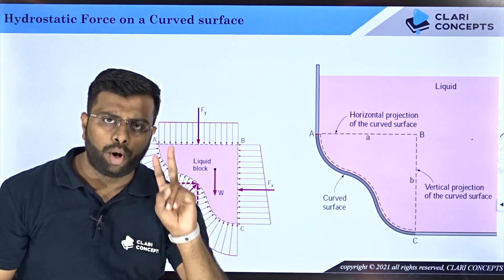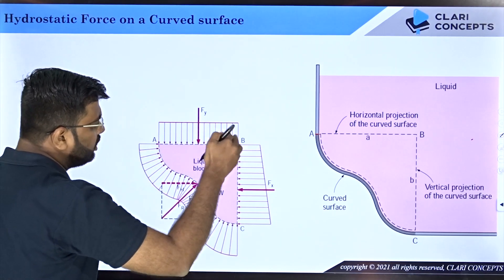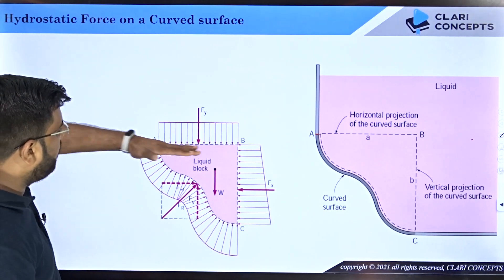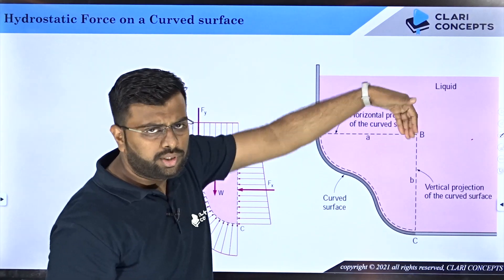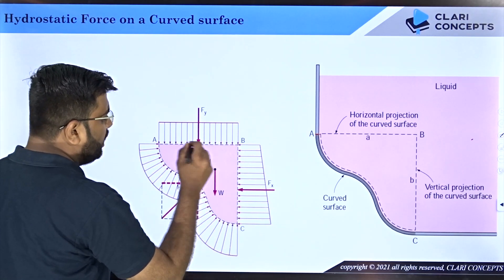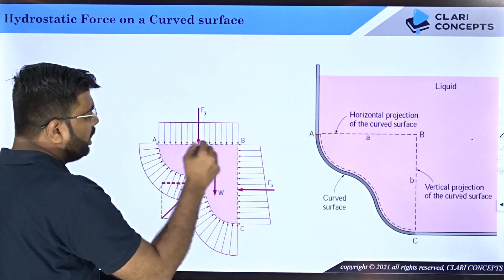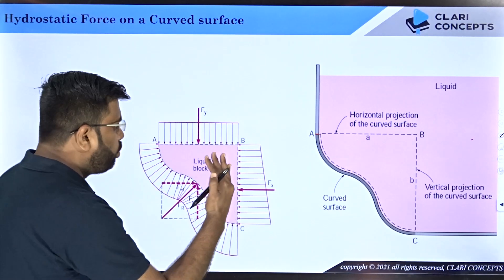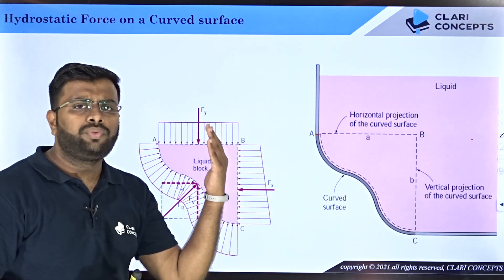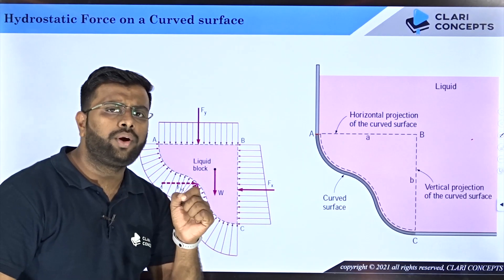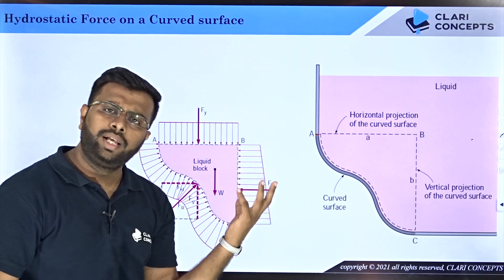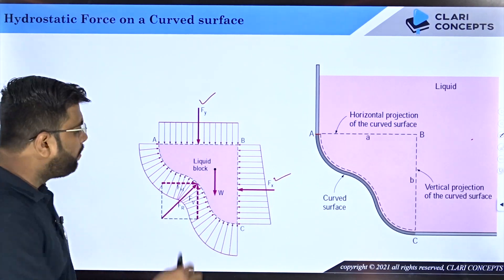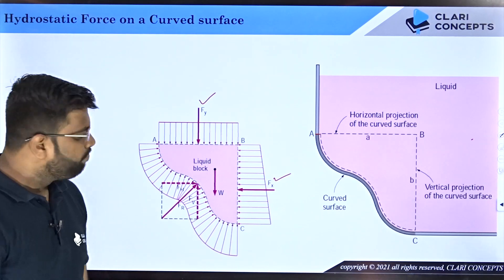We will now see what forces act on this fluid element. There are two types: surface forces, which act on the surface of the liquid pocket, and body forces — basically the weight force — which act at the center of gravity. Surface AB has fluid pressure forces from the top acting on it, giving a vertical force Fy. Force on face BC is easy to find because it is a plane surface. For plane surfaces, finding hydrostatic force is easy: find pressure at the centroid and multiply by area. Weight W can be calculated from the mass of the fluid element times g.